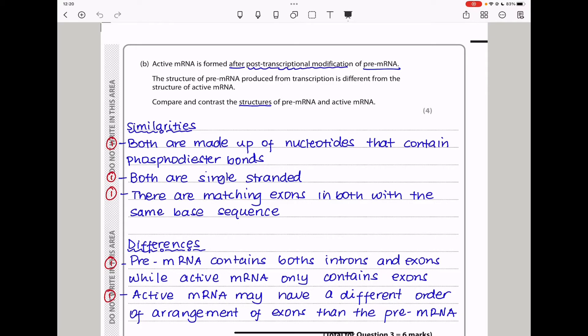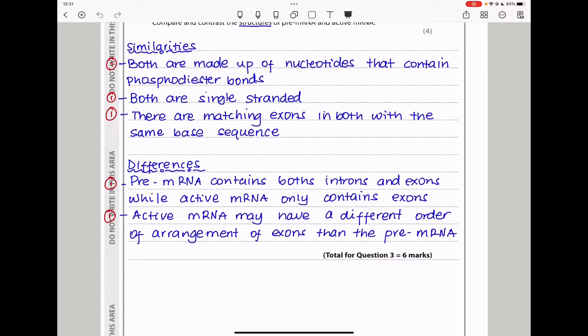Here they say, active messenger RNA is formed after post-transcription modification of pre-messenger RNA. The structure of pre-messenger RNA produced from transcription is different from the structure of active messenger RNA. Compare and contrast structures of pre-messenger RNA and active messenger RNA. When they ask us to compare and contrast, we need to talk about the similarities as well as the differences. So for similarities, both are made up of nucleotides that contain phosphodiester bonds. And also, both are single-stranded. There are also matching exons in both with a stem bed sequence. For the differences, pre-messenger RNA contains both introns and exons, while active messenger RNA only contains exons. Active messenger RNA may have a different order of arrangement of exons than the pre-messenger RNA. Because after post-transcription modification, the exons can be rearranged in a different order. So this brings us to the end of question 3.